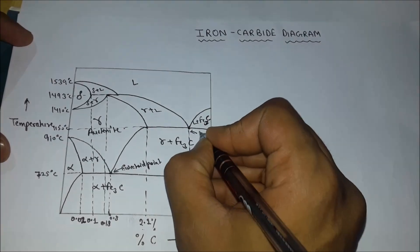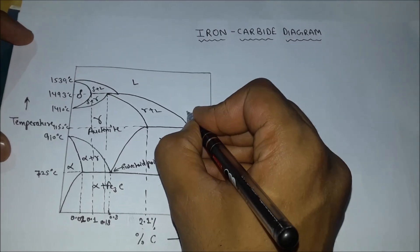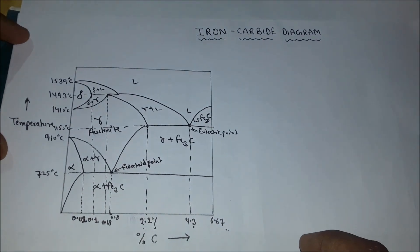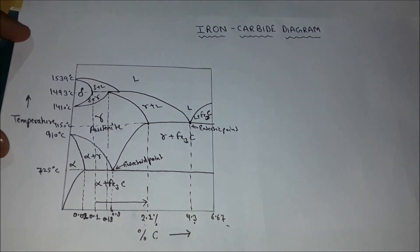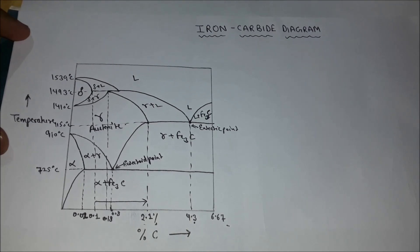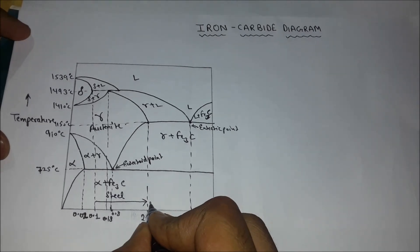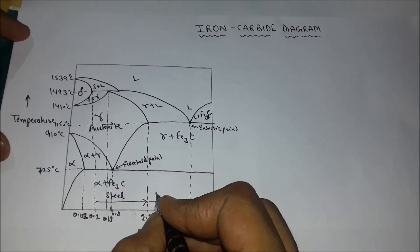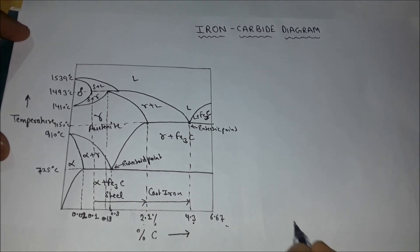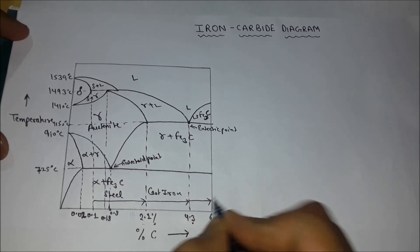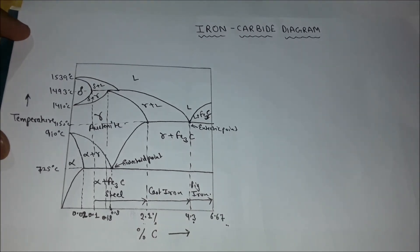This point is known as the eutectic point. From 0.1% of carbon to 2.1% of carbon in iron, this portion is known as steel. From 2.1% to 4.3%, this is known as cast iron. From 4.3% to 6.67% of carbon in iron is known as pig iron. Thank you.